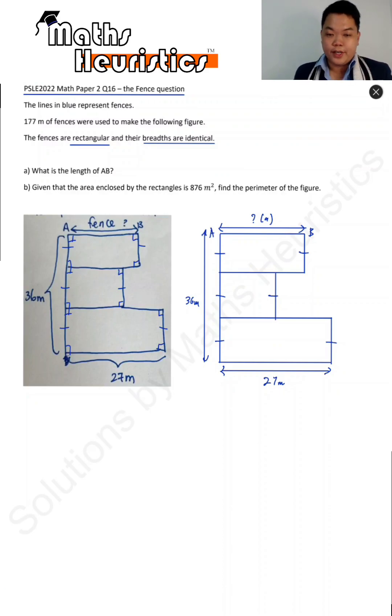We are to find the length of AB and the perimeter of the figure given that the area enclosed by the three rectangles is 876 square meters. First thing you have to take note of, you have to make this distinction that the perimeter of the figure is the continuous outline's length, whereas 177 meters of fence includes the inside. So once you've made that clear...